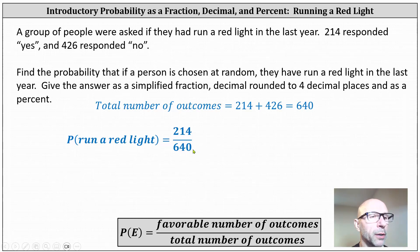Now let's simplify this fraction. The only common factor between 214 and 640 is 2. Dividing the numerator and denominator by 2, we have the simplified fraction of 107/320.